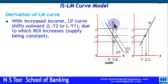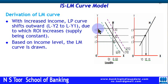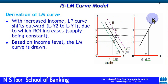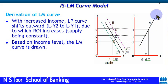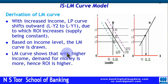This happens because supply is constant. There is an increase in income, and people want to hold liquidity, hence the rate of interest increases. Based on the income level, the LM curve is drawn. Corresponding to each income level, we plot the points and draw the LM curve. The LM curve shows that with higher income, demand for money is higher, and hence the rate of interest is higher.